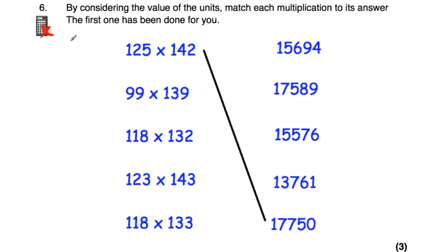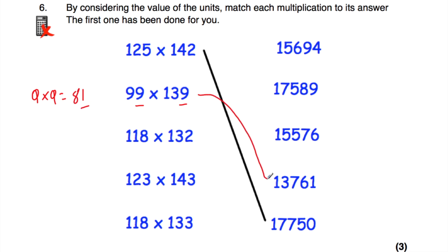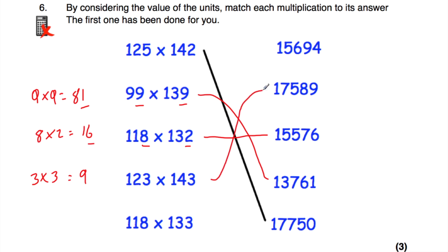Question number six has bigger numbers to match. The first is done: 5 times 2 is 10, ending in a 0. The remaining answers end in 4, 9, 6, and 1. Nine times 9 is 81, ending in 1 — matched. Eight times 2 is 16, ending in 6 — matched. Three times 3 is 9 — matched. Finally, 8 times 3 is 24, ending in 4 — matched to the one at the top.